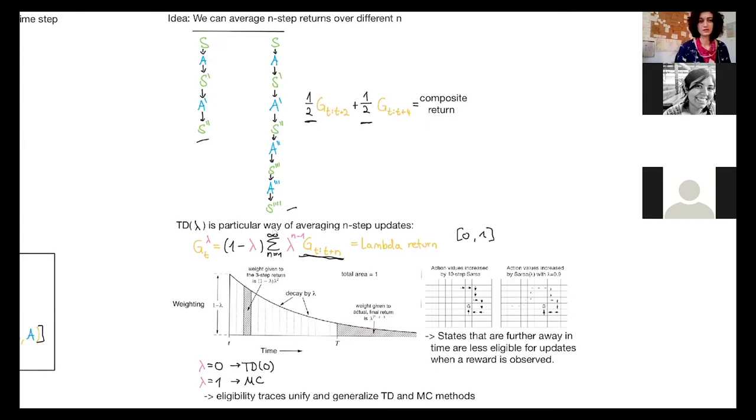Which means that eligibility traces unify and generalize TD and Monte Carlo methods.